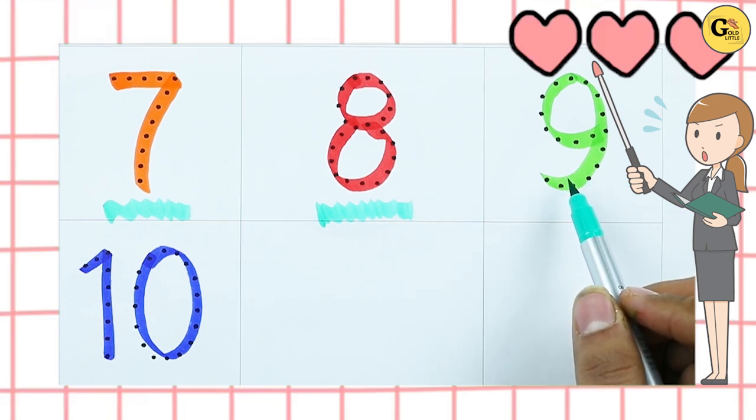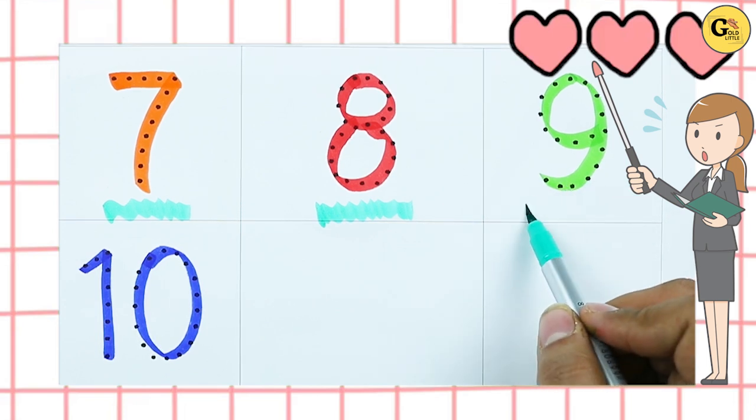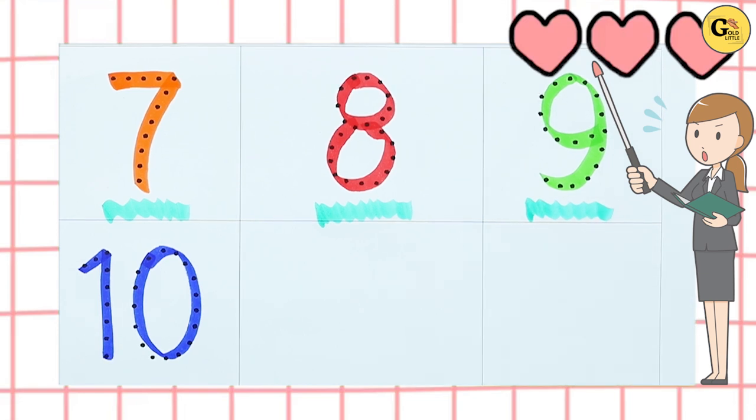Which color is this? Green, green color with number 9. Which number is this? 1, 0, 10.